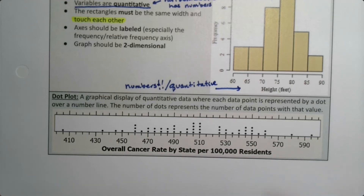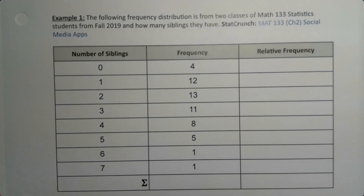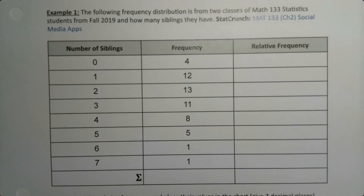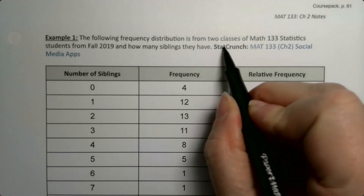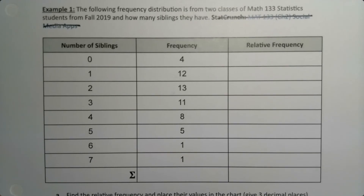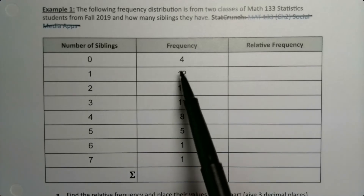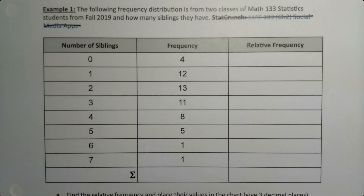Let's start by looking at a discrete quantitative frequency histogram for a frequency distribution. We have number of siblings and we have frequencies here. To find the sum of the frequencies we need to add up these numbers.